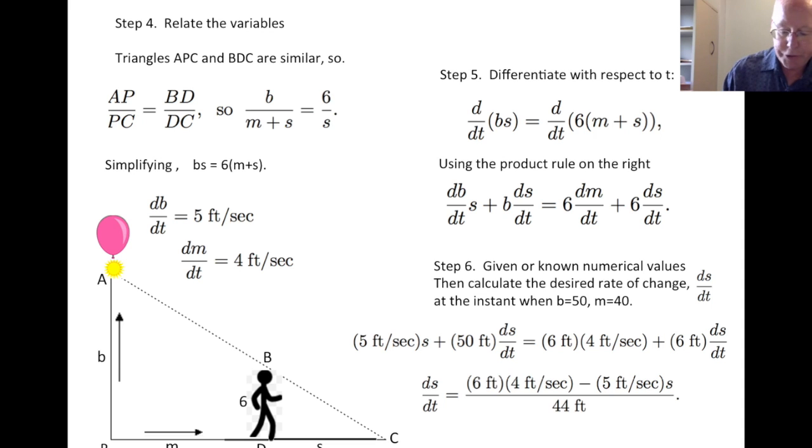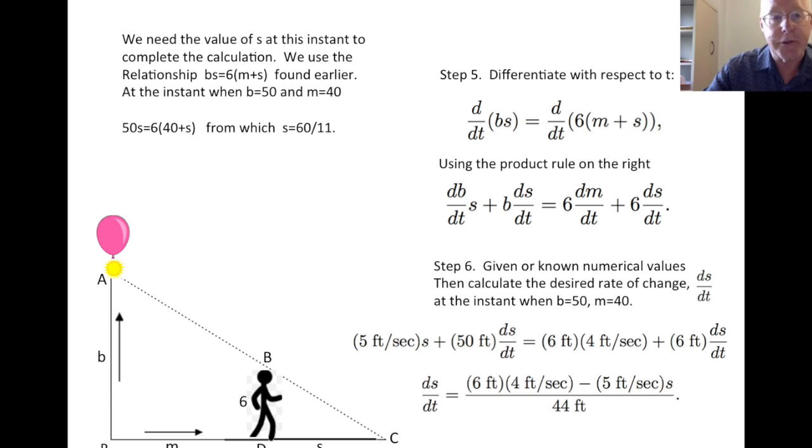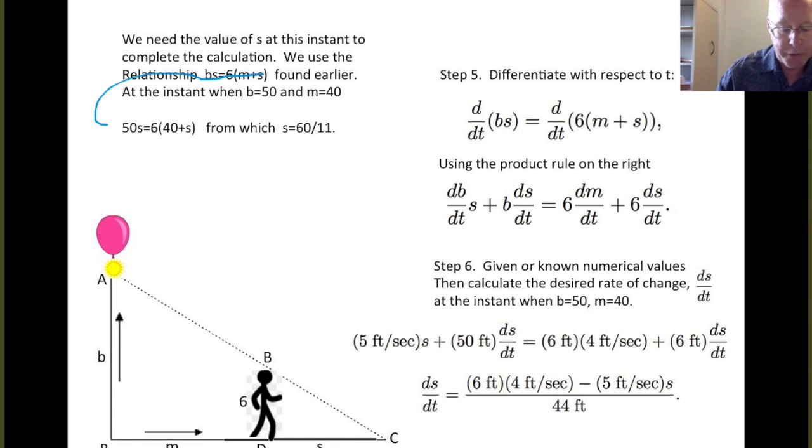So here is our relationship for dS/dt, and we're going to use this now to find how fast the length of the shadow is changing, that is what is dS/dt at the instant in question. Now notice we have all numbers here except for this one appearance of S. We're going to have to take care of that, and that's just a little more arithmetic. So we need the value of S at this instant to complete the calculation. We're going to use the relationship that we have between the variables. We found earlier, BS equals 6 times M plus S. So, and if we want then at the instant when B equals 50, M equals 40, we can replace B by 50, M by 40 in this relationship. We get this expression, and then solve for S, which turns out to be 60 over 11, and of course that is given in feet, it's the length of the shadow.